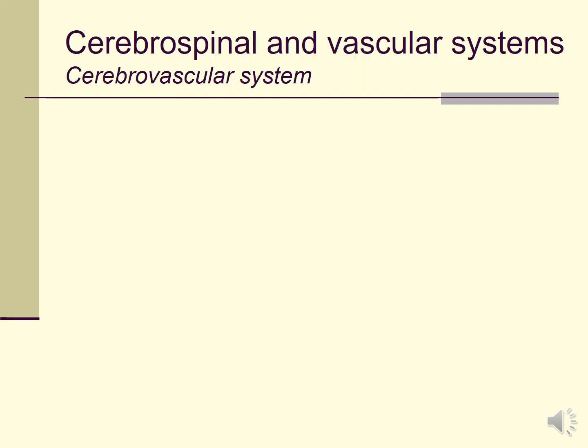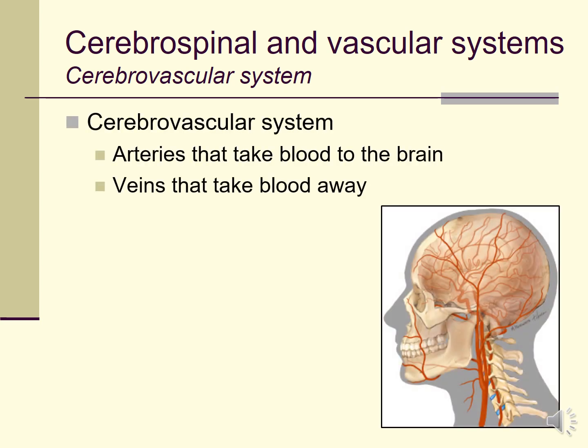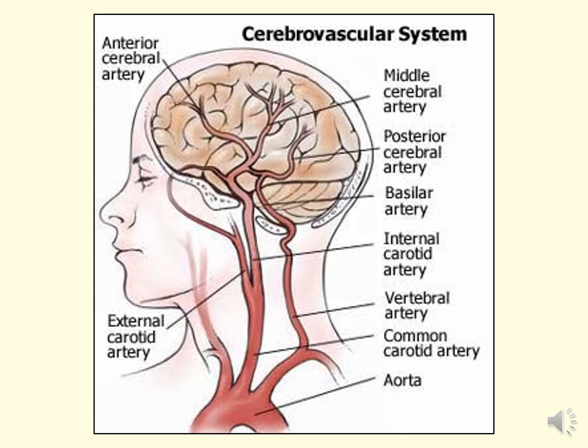Along with the cerebrospinal system there's the cerebrovascular system — all the arteries that take blood to the brain and the veins that take blood away. You can see a diagram of the different arteries supplying blood to the brain, including the carotid artery, the basilar artery, and others. The brain needs to be supplied with quite a bit of blood by these various arteries, and veins take blood away from the central nervous system back towards the heart.